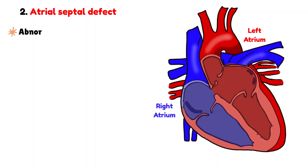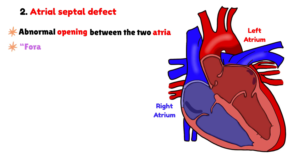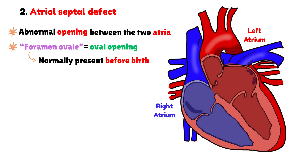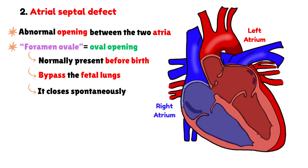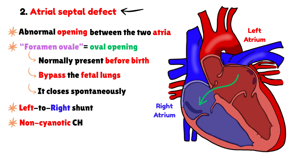Let us move on to the atrial septal defect. This is an abnormal opening in the septum that separates the two atria. The term foramen ovale, which in Latin means oval opening, refers to a structure that is normally present during fetal life. Its purpose is to allow blood to bypass the non-functioning fetal lungs. Normally, after birth it closes spontaneously. However, when this closure does not occur, the result is an atrial septal defect, which behaves as a left-to-right shunt, and therefore as a non-cyanotic congenital heart disease.